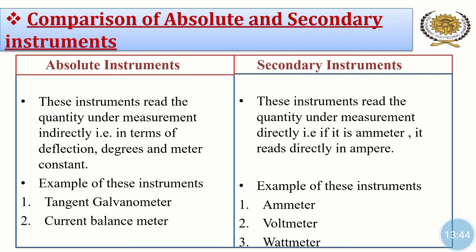Now let us move towards the comparison of absolute and secondary instruments. Absolute instruments read the quantity under measurement indirectly, that is in terms of deflection degrees and meter constant. Secondary instruments read directly — for example, if it is an ammeter, it reads directly in amperes. Examples of absolute instruments are tangent galvanometer and current balance meter. Examples of secondary instruments are ammeter, voltmeter, wattmeter, etc.